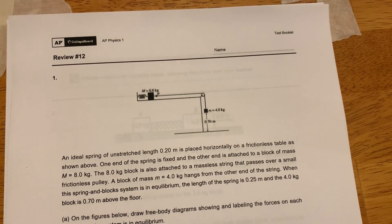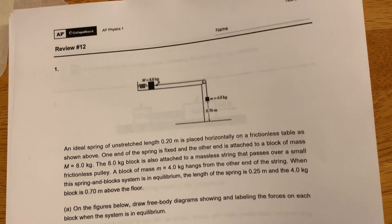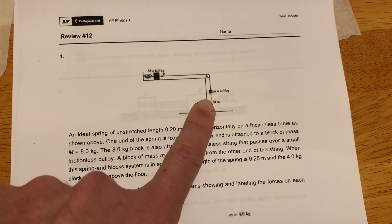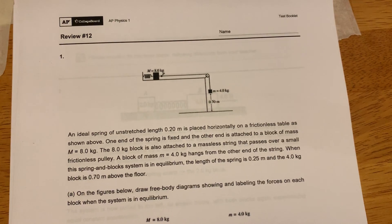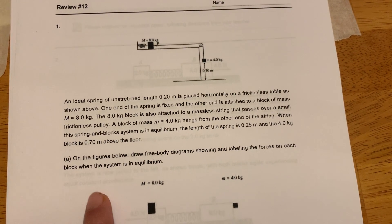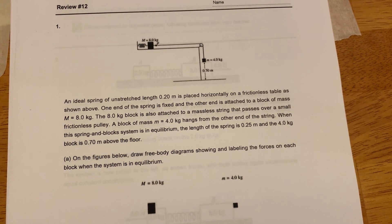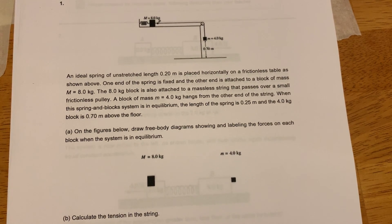All right guys, Greaves here. Review 12. So let's take a look. The situation: I have a two-block system on a pulley connected to a spring. Obviously you've read the problem. On the figure below, draw the free body diagram showing and labeling all the forces acting on the block when the system is in equilibrium.